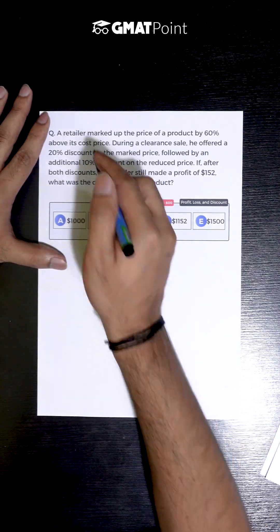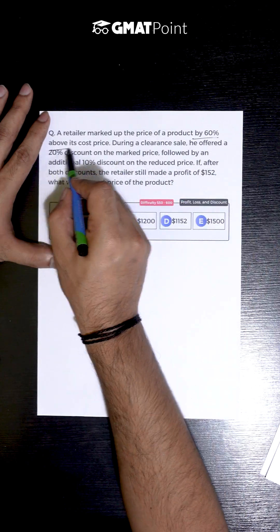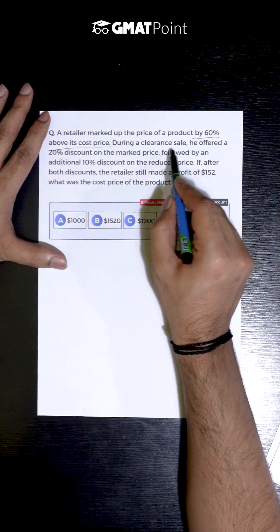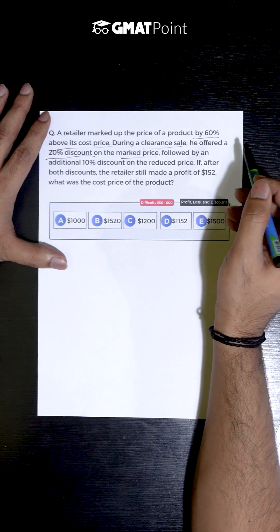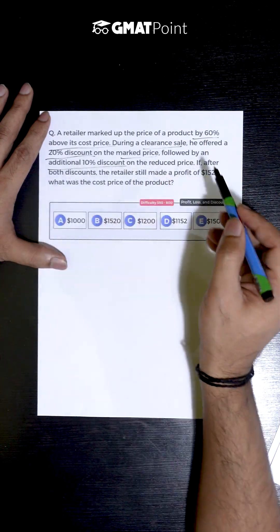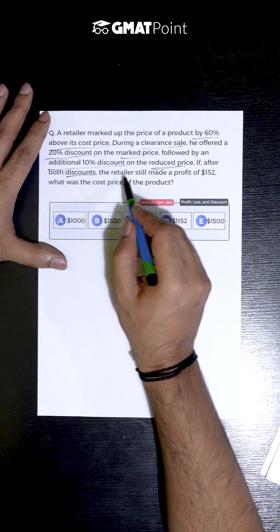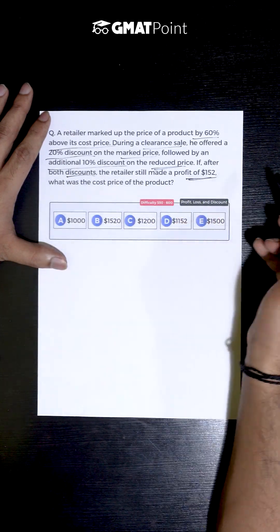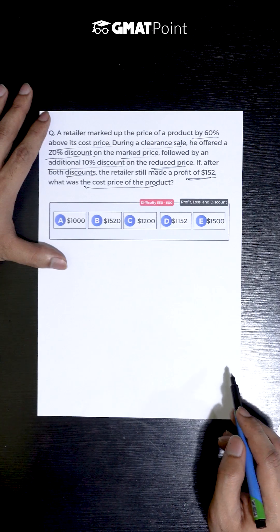Let us see how to solve this question. A retailer marked up the price of a product by 60% above its cost price. During a clearance sale, he offered a 20% discount on the marked price followed by an additional 10% discount on the reduced price. If after both the discounts, the retailer still made a profit of $152, what was the cost price of the product?